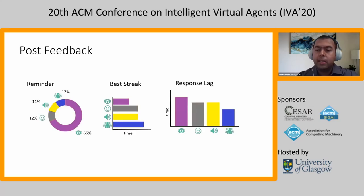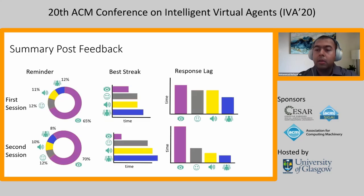For the post-conversation feedback, we designed three types of summary. First, the reminder, which indicates how many times the user receives what type of feedback. The base streak represents how long the icons were green, and the response length represents, on average, how long the icons were red. Users can compare their feedback throughout multiple sessions. In this particular case, the users got worse in their eye contact but improved their body language.